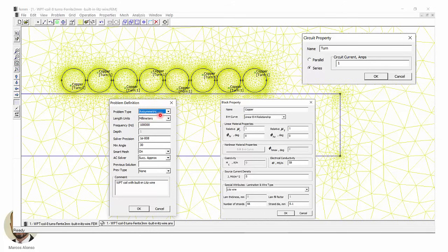And here we have the complete definition of the problem. It is an axisymmetric problem in millimeters. We are going to do an analysis at 100 kilohertz. The rest of the parameters are by default. Here we have the definition of the copper. And the important part is here. We are using Litz wire with 66 strands and with a diameter of 0.1 millimeter for each strand.